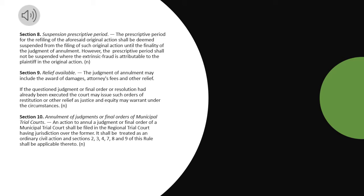Section 9, Relief Available. The judgment of annulment may include the award of damages, attorney's fees, and other relief. If the questioned judgment or final order or resolution had already been executed, the court may issue such orders of restitution or other relief as justice and equity may warrant under the circumstances.